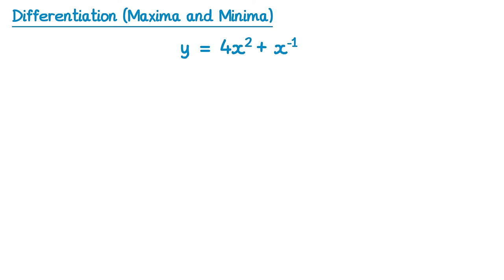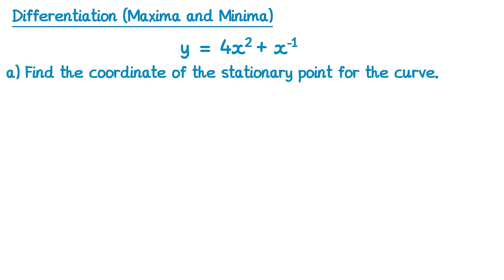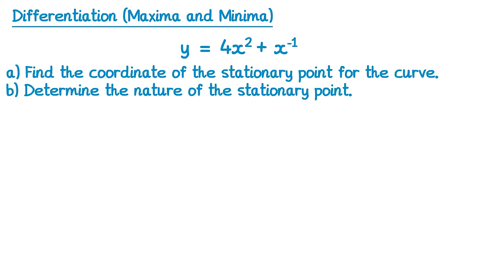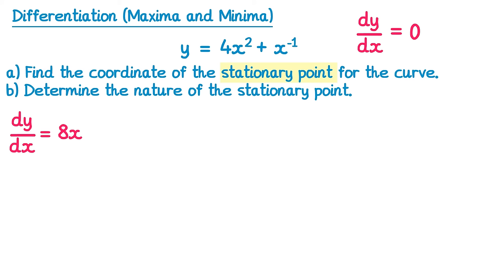Let's apply this to a question. We have this curve and first we want to find the coordinates of the stationary point, then determine its nature — meaning maximum or minimum. We know at a stationary point dy by dx equals zero. Differentiating: 4x squared gives 8x, and x to the power negative 1 gives negative x to the power negative 2, which we may rewrite in fraction form. We know this must equal zero.